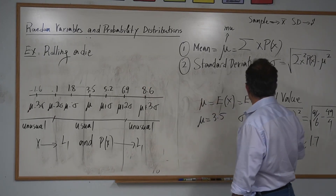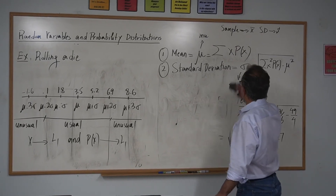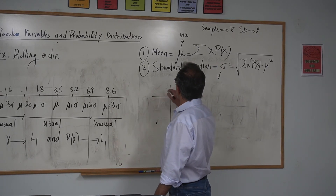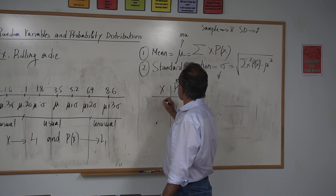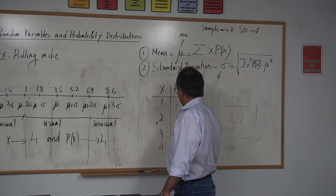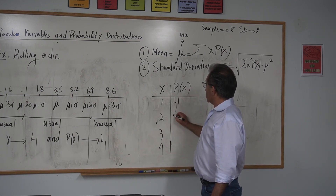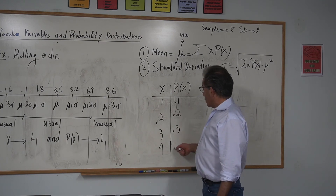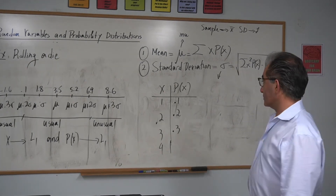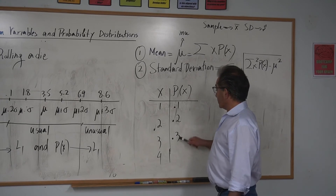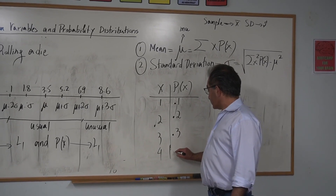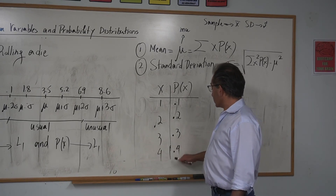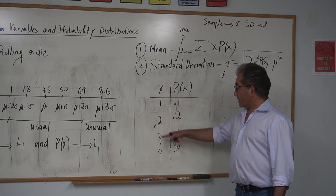Let me put one practice problem for you to try until our next video. Make a table with X values 1, 2, 3, 4 and P(X) values 0.1, 0.2, 0.3, and then think: what should go for number 4? You can't just put any number — the sum has to be 1. So 0.1+0.2+0.3 = 0.6, meaning the last probability has to be 0.4. After this lecture, find the mean and standard deviation by hand and use your calculator too.